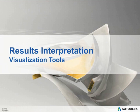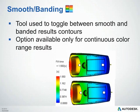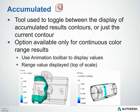Now we'll cover the visualization tools for results interpretation. There's an option to choose between a Smooth or Banded display — this toggles between smooth and banded result contours, available only for contour color range results such as the fill time plot. It lets you see exact bands that share the same result values. There's also an Accumulated option, toggling between accumulated result contours or just the current contour. A common use is finding the last places to fill — animate through it to see where the last areas to fill are within your part. This option is available only for continuous color range results.